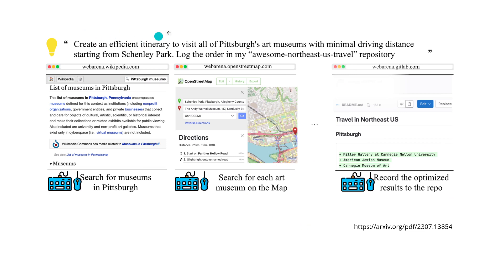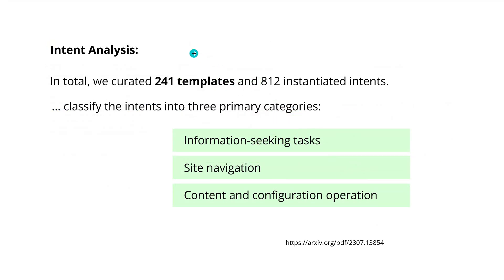A simple example from the publication: the task is to create an efficient itinerary to visit all Pittsburgh art museums with minimal driving distance, starting from a particular location, and log it to a repo. The agent goes to Wikipedia, OpenStreetMap, does the calculation, and produces the final result. Interestingly, they propose intent analysis — understanding what the user wants with their query. If we understand the intention, we can build an optimized agent environment with specific tools.